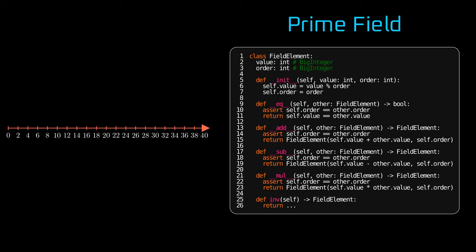To check if two elements of the field are equal, we simply check if their values are equal. To add, subtract, or multiply, simply add, subtract, and multiply values and create a new instance, which will ensure the value is stored modulo the order.